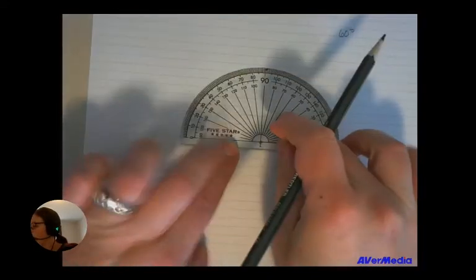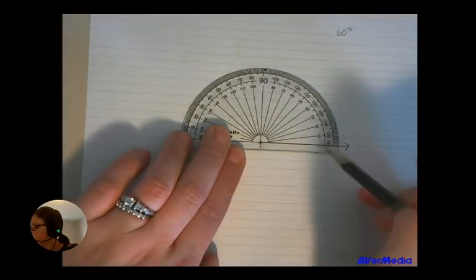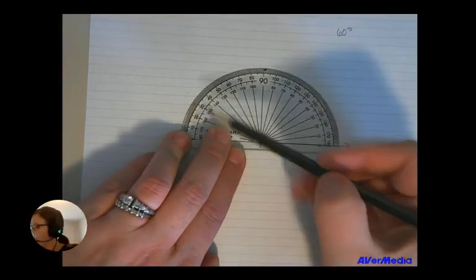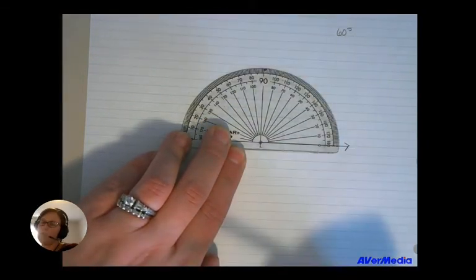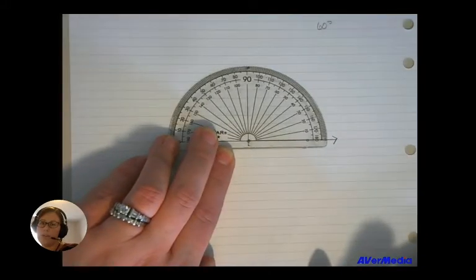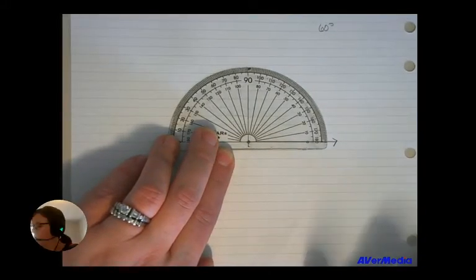And now we're going to look at the numbers. As we learned last week, there are two sets of numbers. There's an inside set of numbers on the protractor and an outside set of numbers on our protractor. And we have to use some common sense and thought to figure out what set or which number to use.